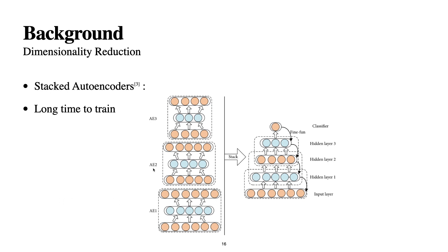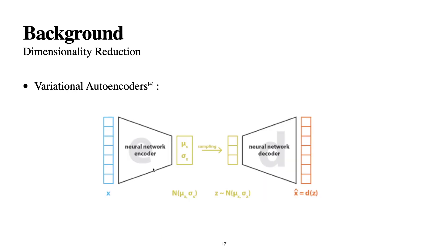Training the stacked autoencoder takes a really long time because we are training each layer individually, and we need more hyperparameters. The third type of autoencoder is the variational autoencoder. Here we don't have fixed weights in the bottleneck — instead we have a mean and variance. We sample from this model: we calculate the mean and variance and then sample from it, rather than using fixed weights.